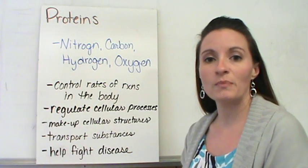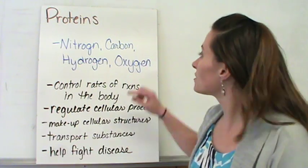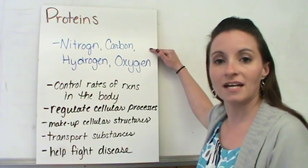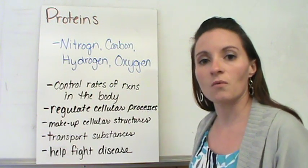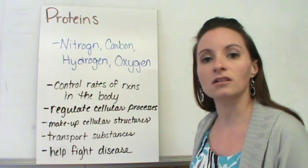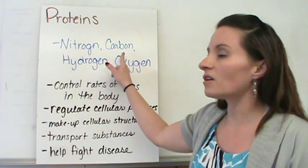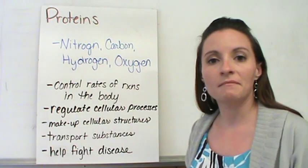Now, one of the biggest things with proteins is that they're made from nitrogen, carbon, hydrogen, and oxygen. So if you see a molecule within a living thing that they call an organic molecule, and it's made of all four of these, it might be a protein.